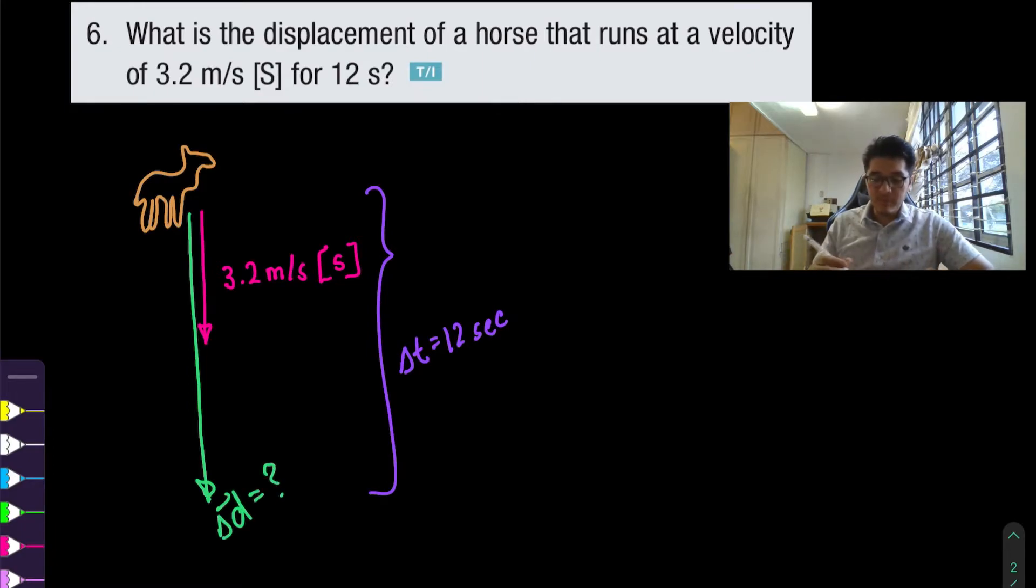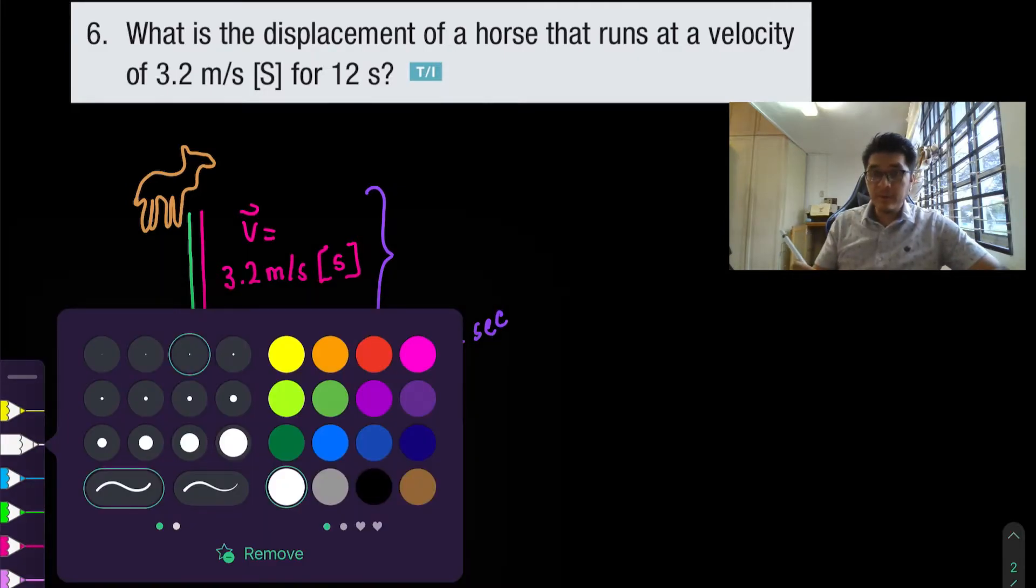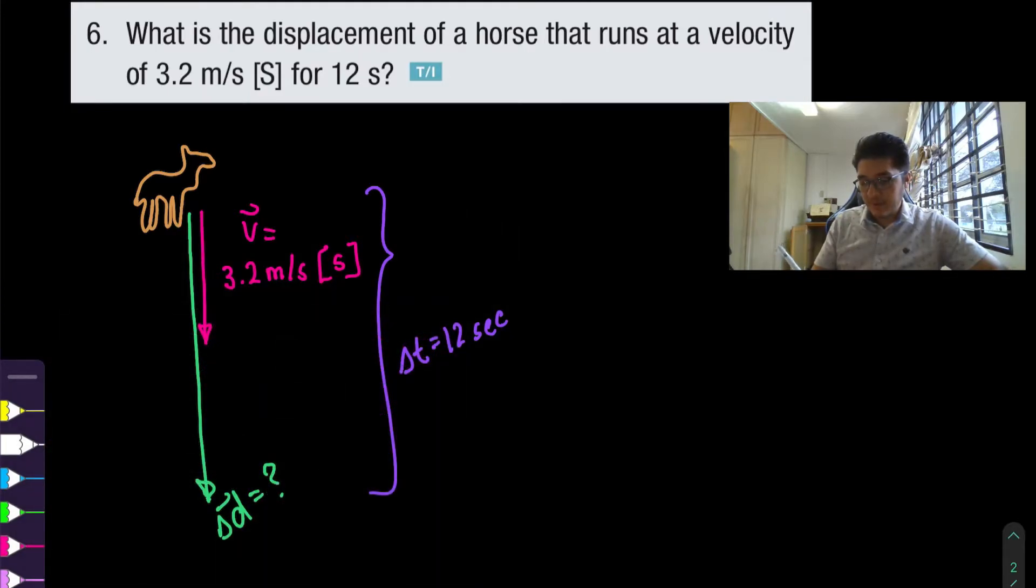But we have a relationship between velocity, displacement and change in time which is the formula of the position time graph. So here to calculate it we just use the relationship that we found before. Velocity is displacement over the change in time. And we could just rearrange this equation for the displacement only by multiplying both sides to this equation by the change in time.